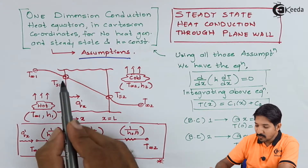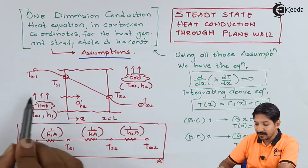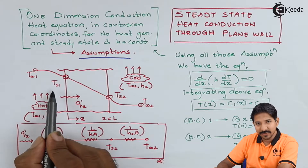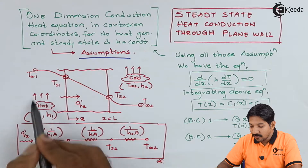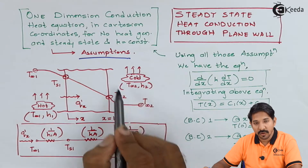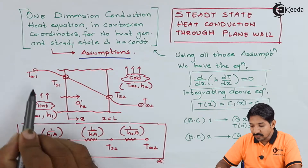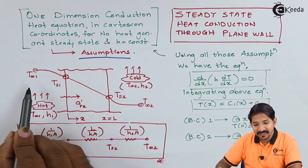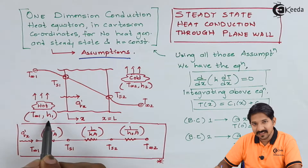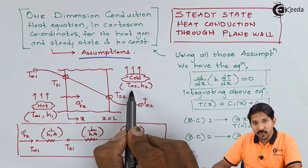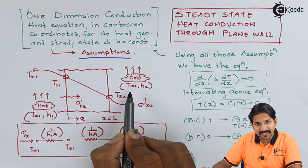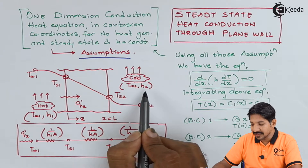Now let us consider there is a small wall. To the left there is a temperature Ts1, to the right there is a temperature Ts2. There is a hot fluid flowing to the left hand side of the wall, and cold fluid flowing to the right hand side of the wall. The temperature of the hot fluid is T-infinity-1 and the heat transfer coefficient is H1. Similarly, the temperature of the cold fluid is T-infinity-2 and the heat transfer coefficient is H2.